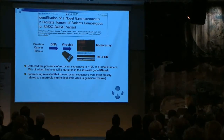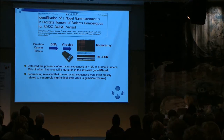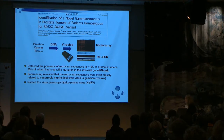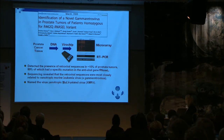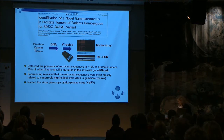When they sequenced that, they found those sequences were most closely related, but not identical, to the xenotropic murine leukemia virus, which is a gamma retrovirus. So because they were closely related but not identical, Bob named the virus xenotropic MLV-related virus, or XMRV. So it's related to, but not identical to, that virus.